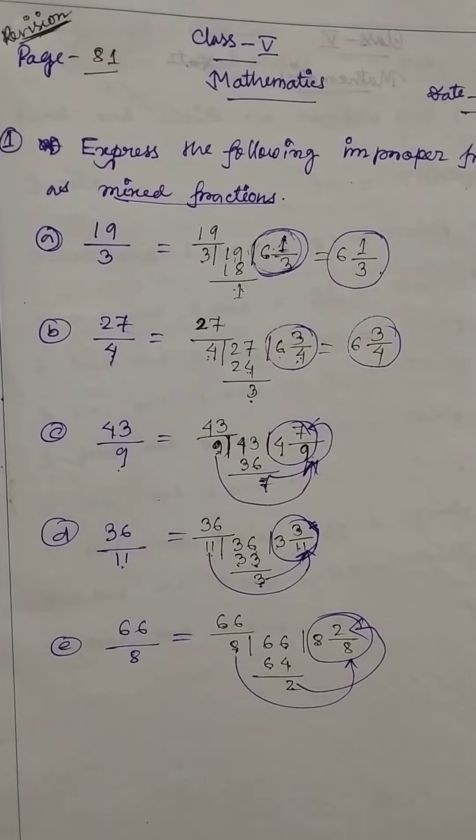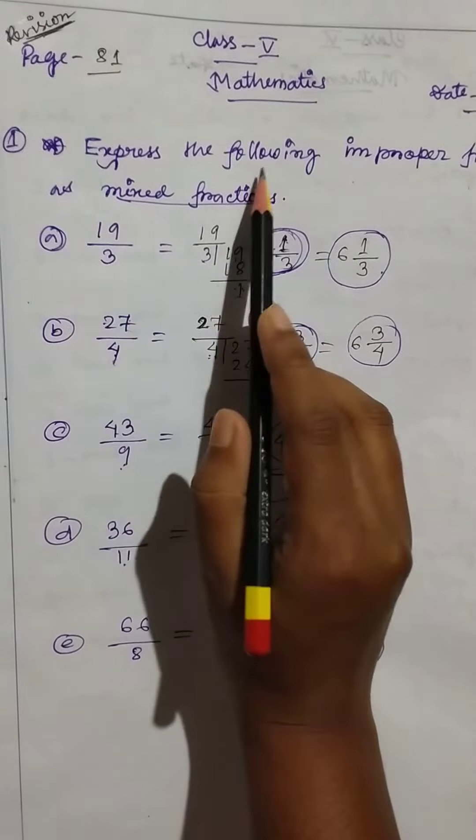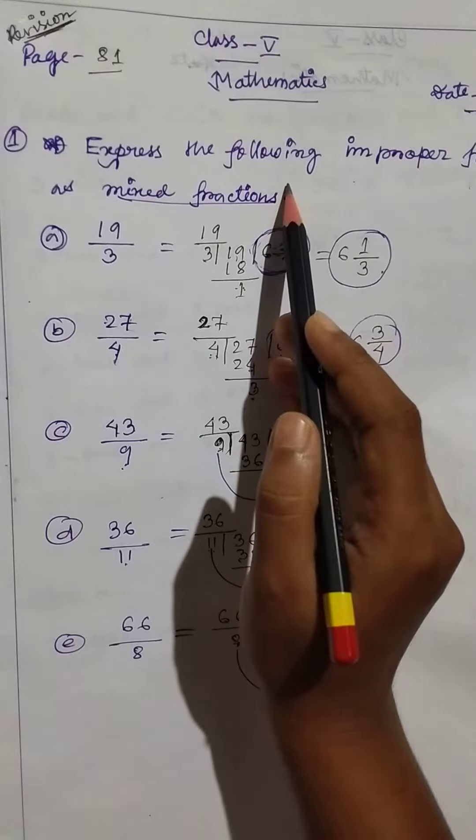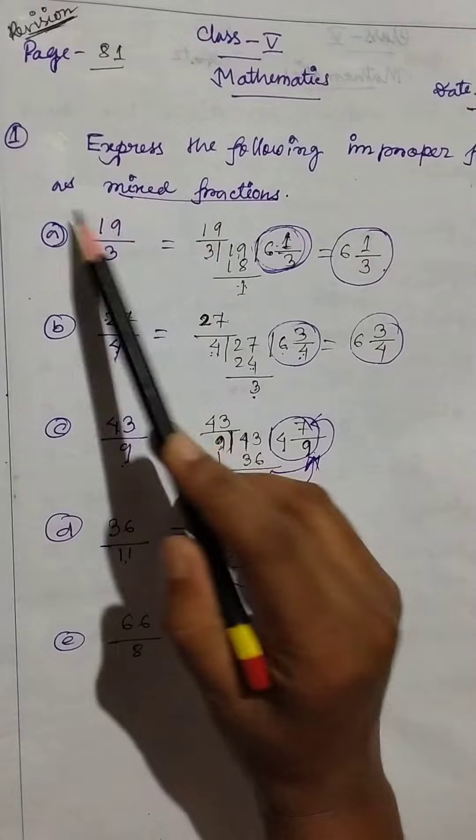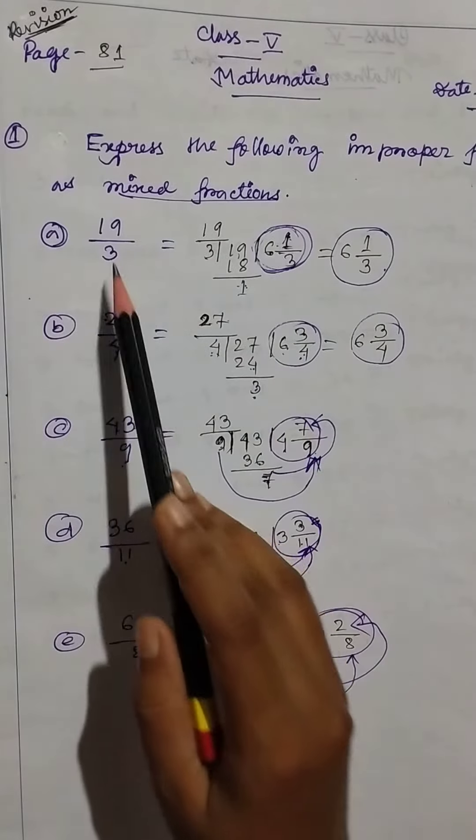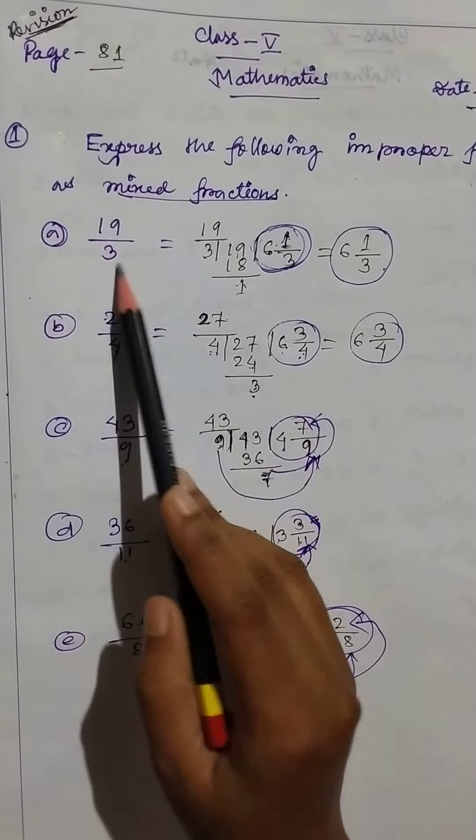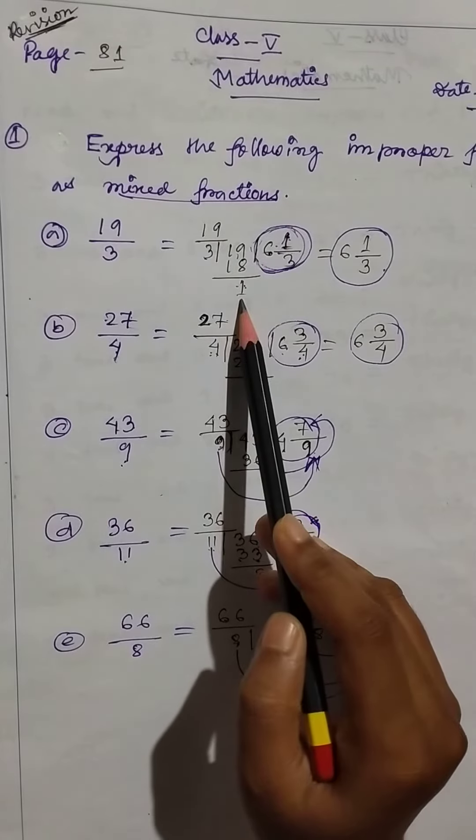Hello students, good morning. Class 5 Mathematics, 25th of September 2020, revision class. Okay, so let's start. Express the following improper fractions as mixed fractions. Okay, so firstly, 19 by 3. So 3, 6, 18, so 1.